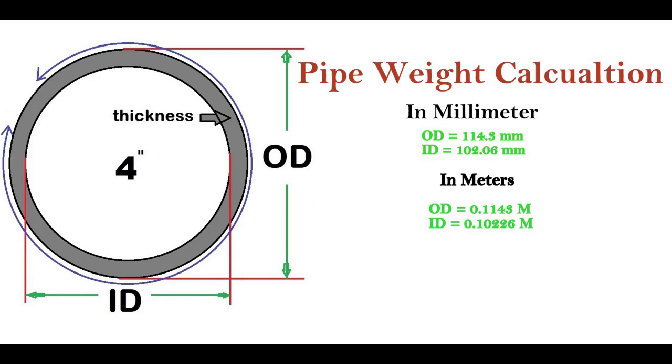OD in meters is 0.1143 meter and ID in meters is 0.10206 meter. We will insert these values into the formula.